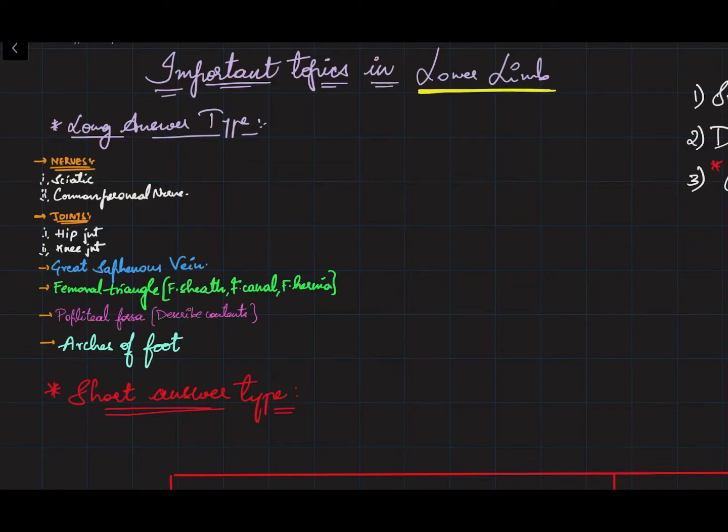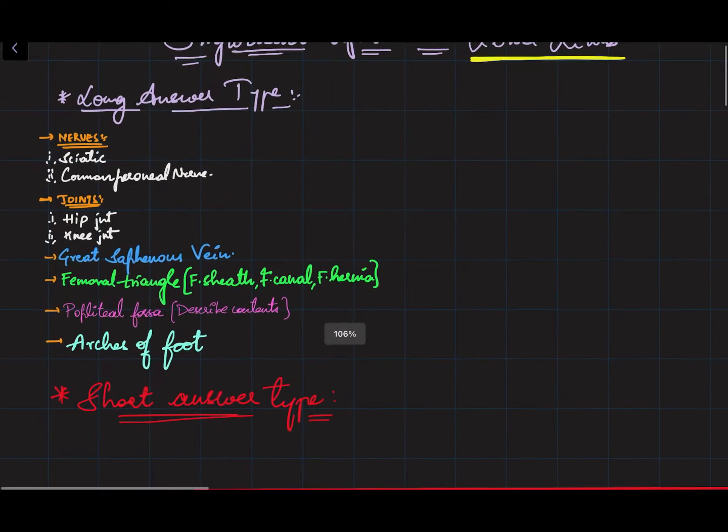These are the topics that you need to study for in lower limb. These are basically the important topics. Besides that, you need to study everything, but you need to start with these topics first. After completing these, you can proceed with all the other topics.